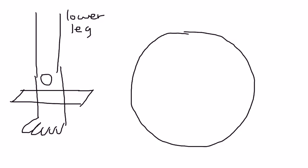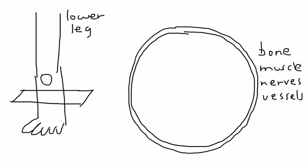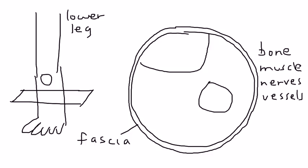There isn't much in a cross section of a limb — basically bone, muscle, nerves, and vessels. Surrounding the cross section is a thin layer known as the fascia. I'll draw that in, along with the two bones: the tibia and the fibula.